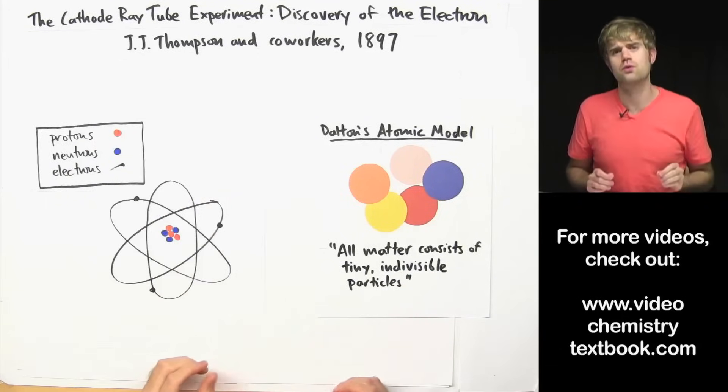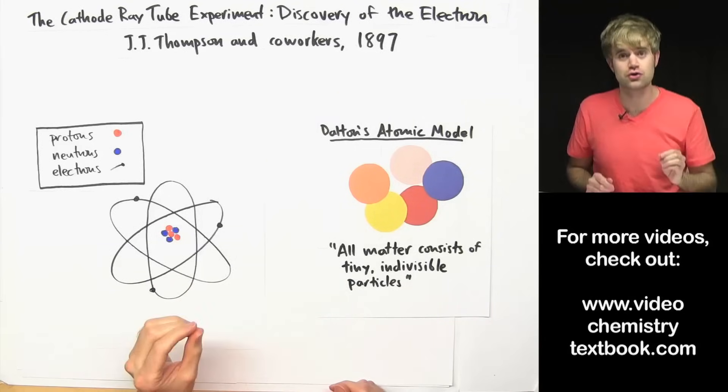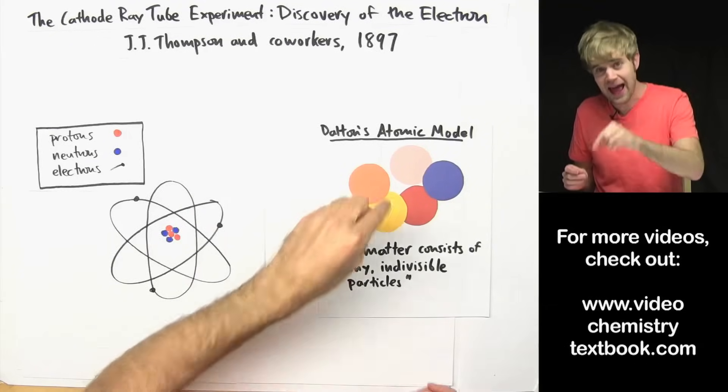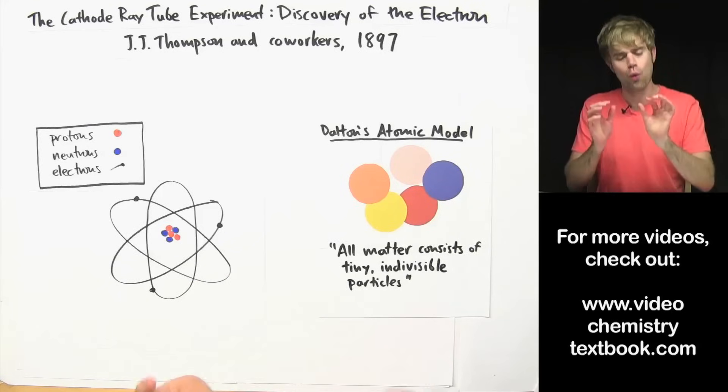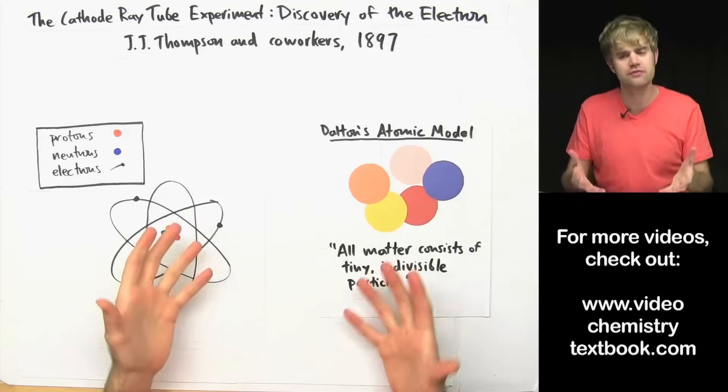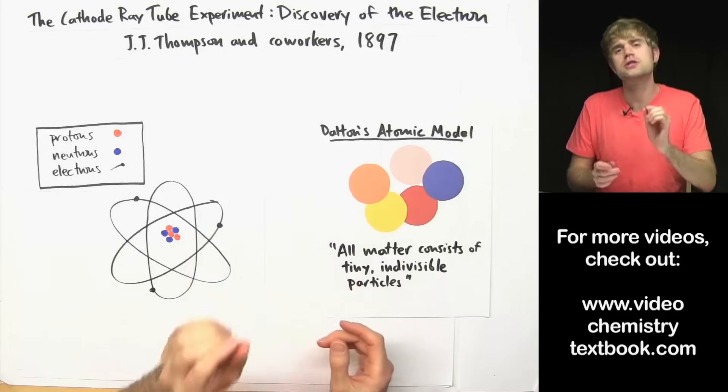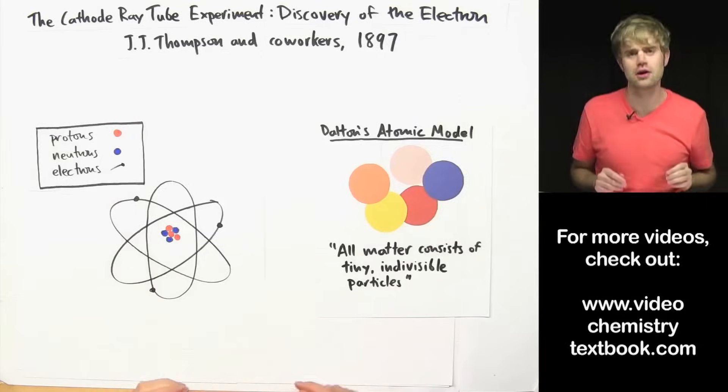But JJ Thompson was able to answer part of that question when he discovered the electron. He discovered that it was much smaller than atoms. He discovered that atoms had electrons. And so he was able to say for the first time that atoms weren't totally solid and indivisible, but they were made up of smaller subatomic particles. Let's look at how he discovered the electron.